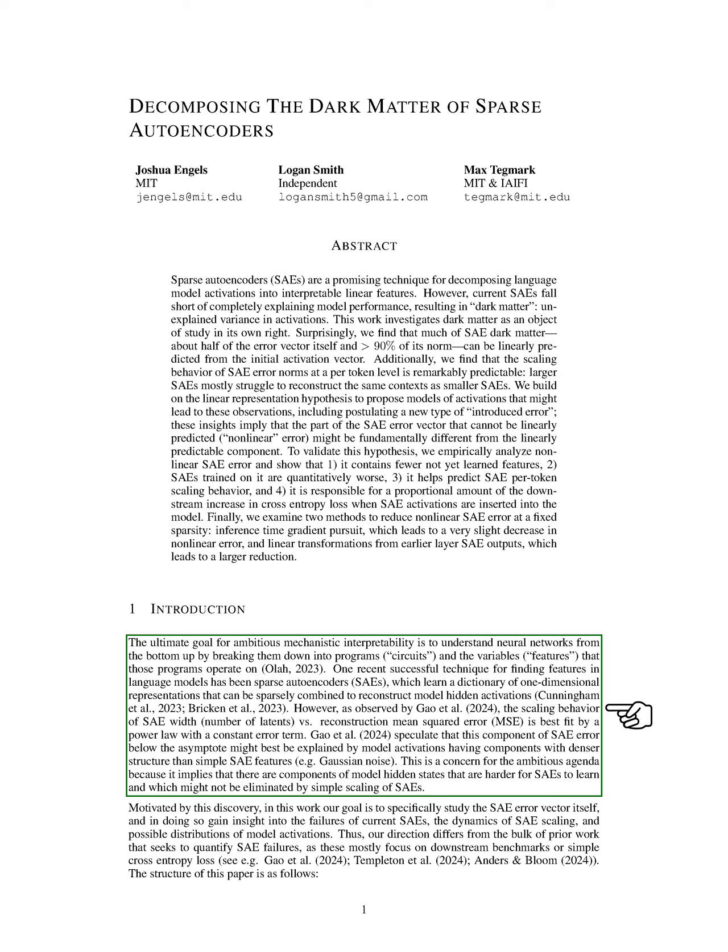A recent effective method for identifying features in language models is the use of sparse autoencoders, SAEs. These SAEs learn a set of one-dimensional representations that can be combined sparsely to recreate the hidden activations of the model. However, the relationship between the width of the SAE and the reconstruction error follows a power law, indicating that some errors persist even as we scale the SAEs.